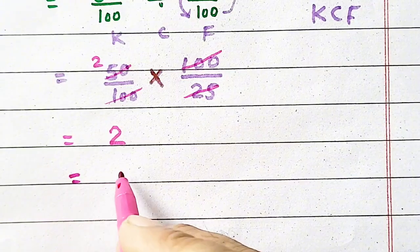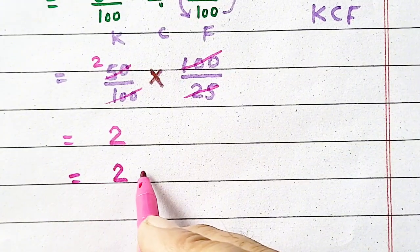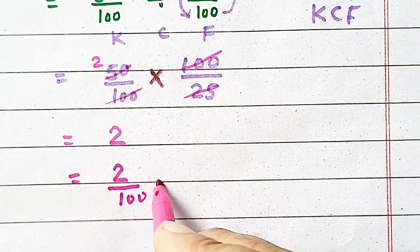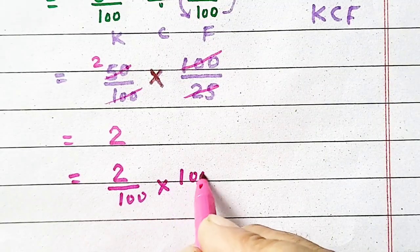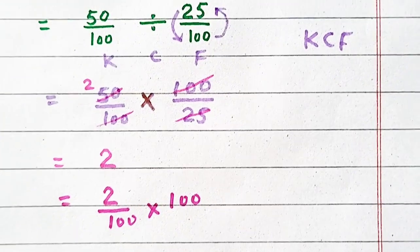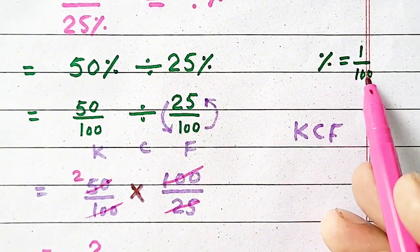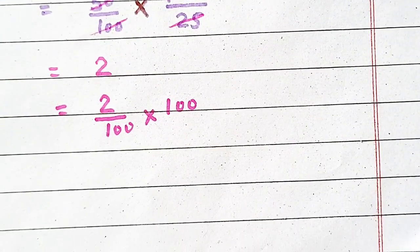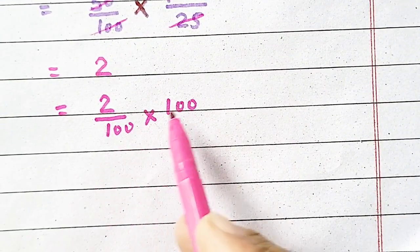It means 2 divided by 100 and multiplied by 100, because percentage is equal to 1 by 100. So you have to multiply and divide by 100.